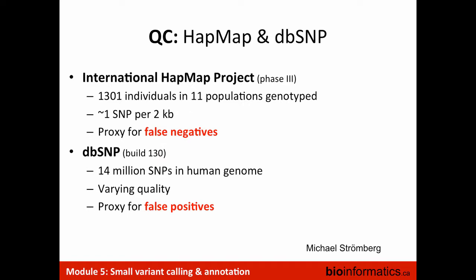HapMap is a proxy for high-quality SNPs and works as a good training set. DBSNP contains lots of real variants but also lots of false positives because many things have been submitted, including common mistakes. Both datasets are interesting for different purposes. Annotating your variants with these databases provides quite a bit of information and helps you identify your true variants. Within the GATK framework, the HapMap SNPs have patterns that are very different from false positives, and you can use that to calibrate your variant calls and give better scores and rankings.